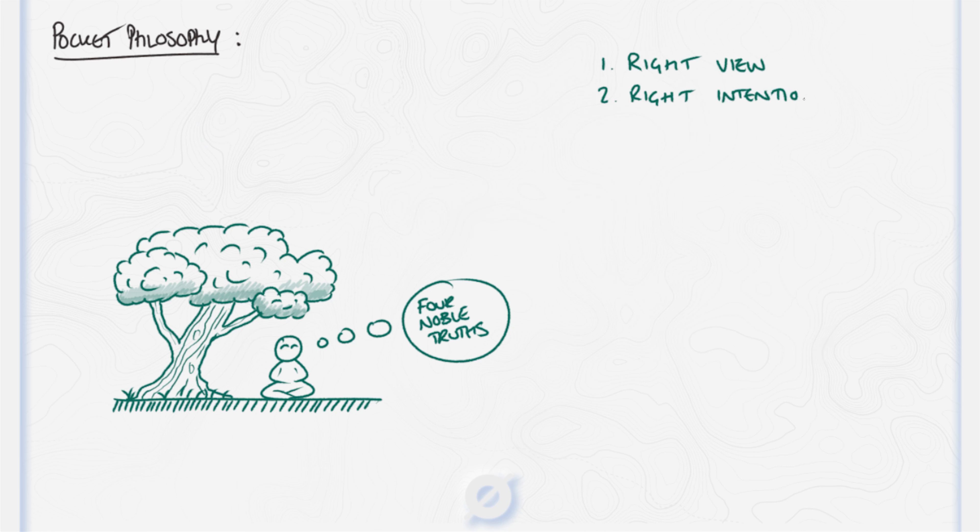Right View. Our actions have consequences. Death is not the end. And the consequences of our actions and beliefs echo after death. Right resolve or intention. The giving up of home and adopting a simpler life in order to follow the path. This concept specifically aims at peaceful renunciation, moving into an environment of non-sensuality, non-ill-will, and away from cruelty.